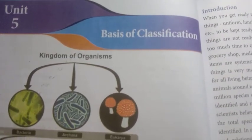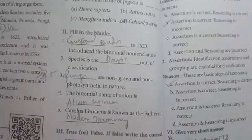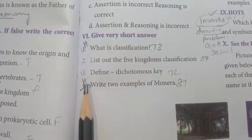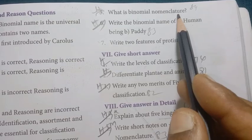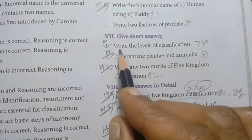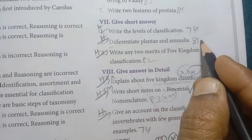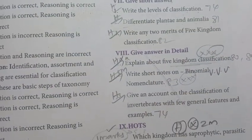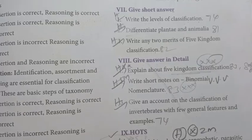Unit 5: Basis of Classification. Practice the 1-mark questions. Give very short answer: What is classification? Write two examples of Monera. What is binomial nomenclature? Write the binomial name of human being and Paddy. Give short answer: Write the levels of classification. Differentiate Plantae and Animalia. Write any two merits of five-kingdom classification. These questions are from previous term question papers — prepare from those as well.